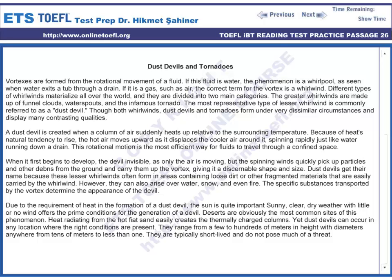Due to the requirement of heat in the formation of a dust devil, the sun is quite important. Sunny, clear, dry weather with little or no wind offers the prime conditions for the generation of a devil. Deserts are obviously the most common sites of this phenomenon. Heat radiating from the hot, flat sand easily creates the thermally charged columns. Yet dust devils can occur in any location where the right conditions are present.